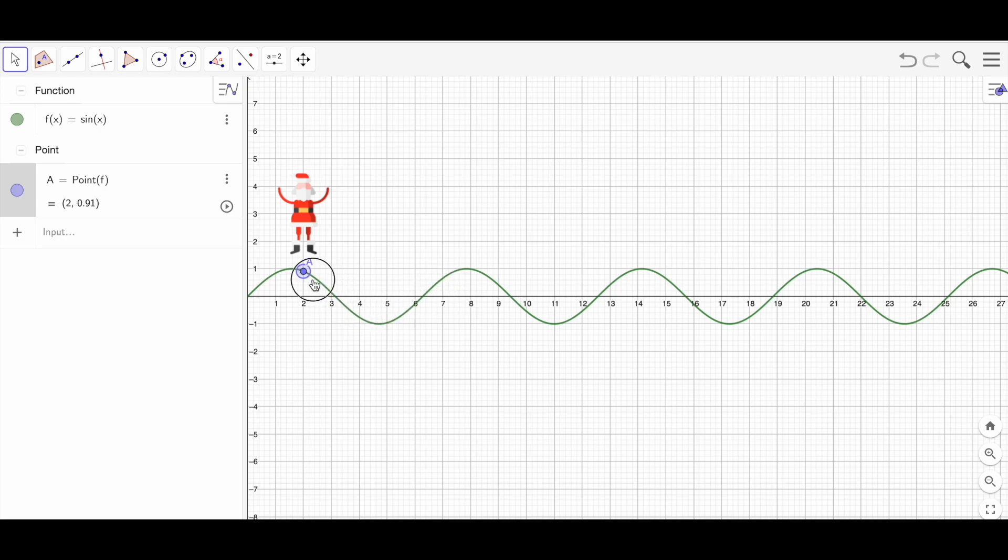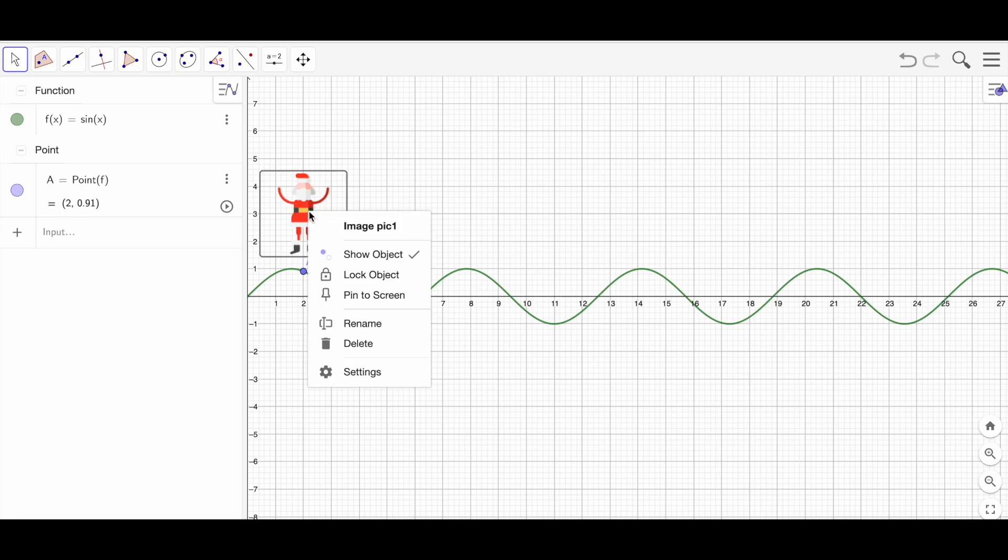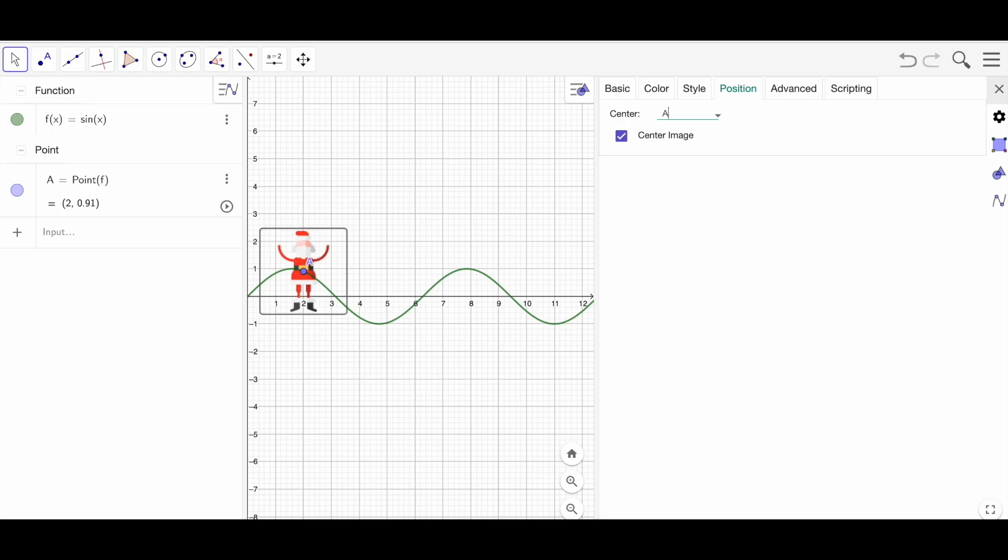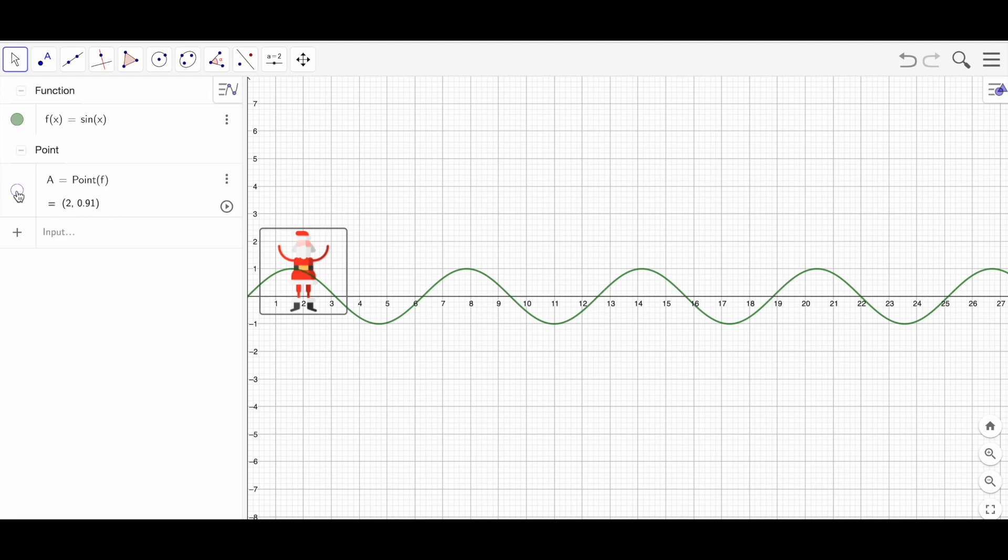What you have to do is just go to image, go to settings, position, and in the center image change this point as A. Now you are done. You can hide the point, you can also hide the curve.